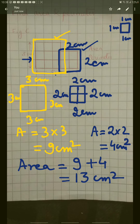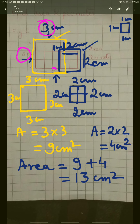This side is 3 centimeters, this side is 5 centimeters, this side is 3 centimeters, this side is 1 centimeter, this side is 2 centimeters, and this side is 2 centimeters. So the perimeter is 3 plus 3 equals 6, plus 5 equals 11, plus 2 equals 13, plus 2 equals 15, plus 1 equals 17. The perimeter is 17 centimeters.